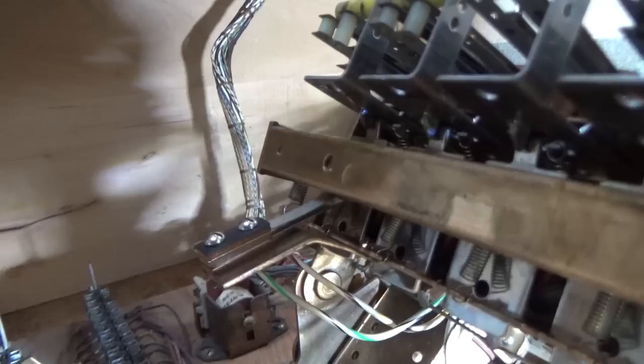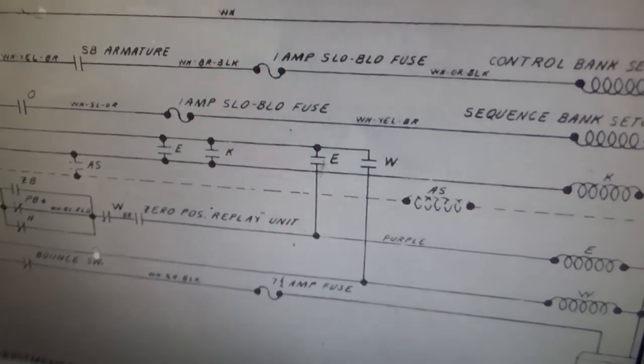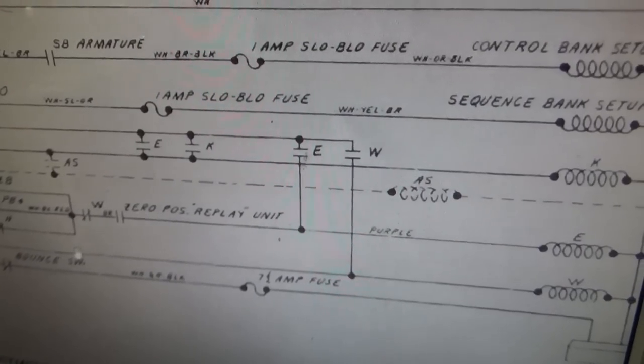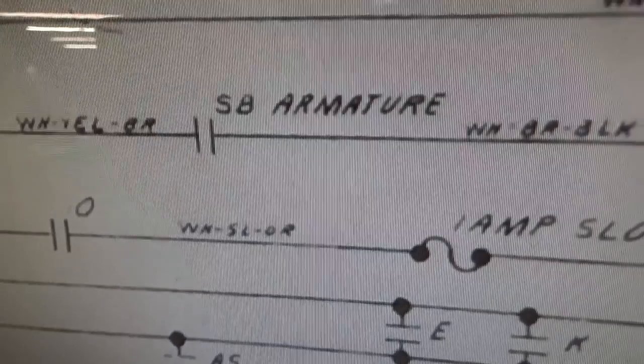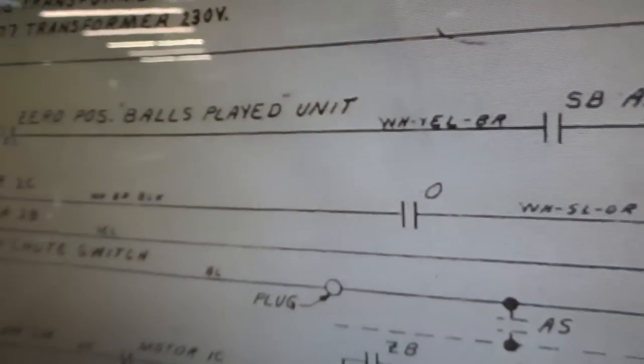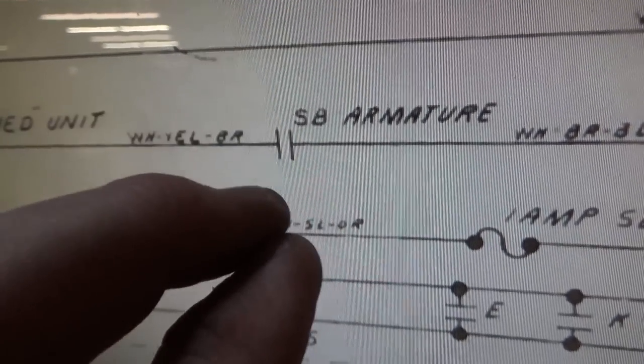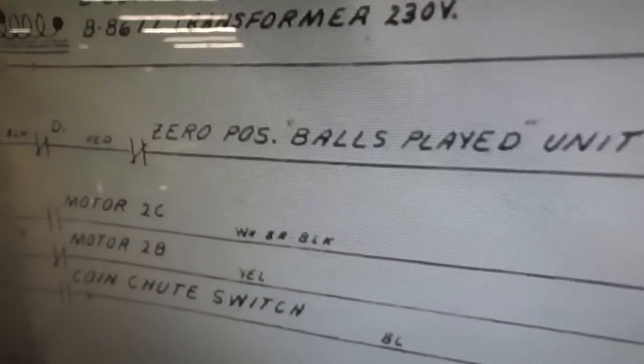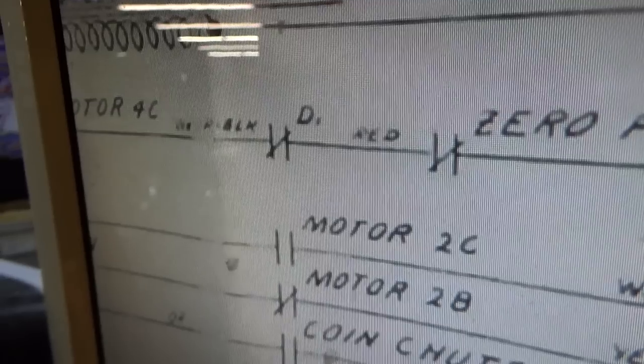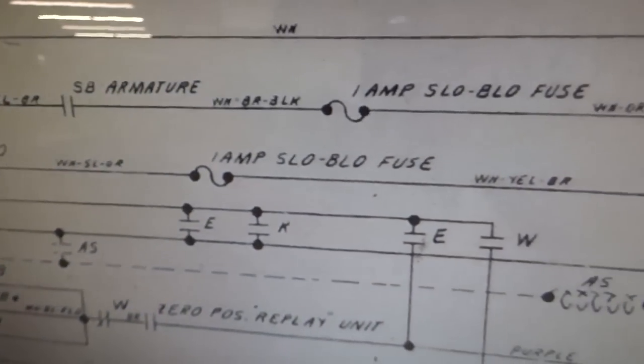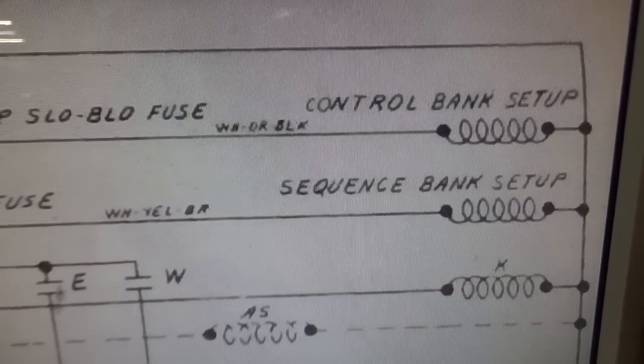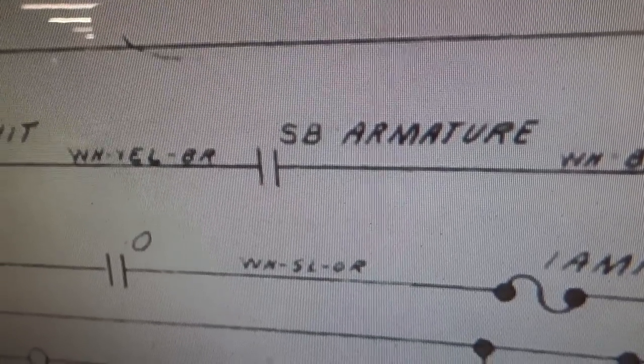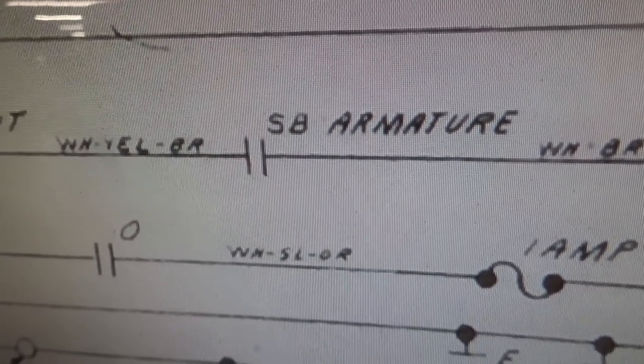Let me show you on some schematics what that actually does. This is off the masquerade. They call it the SB armature switch. The SB is the start relay. When the start relay pulls in, that switch will close. Then when the balls played unit gets back to zero and the motor gets to a certain spot, it makes the control bank reset. So if your control bank never resets, it could be that switch. It's very important but very hard to adjust because it's underneath everything.